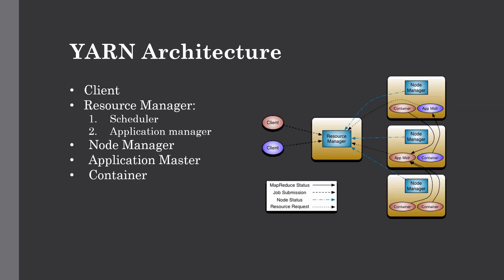Now let's talk about the main components of YARN architecture. The first component is the client, which submits the MapReduce job to the resource manager. The resource manager accepts job submissions from the client, schedules jobs, and allocates resources to them. Resources are the nodes in our cluster that do all the groundwork to process our data. The resource manager is the master daemon of YARN and is responsible for management among all applications. It has two major subcomponents: the scheduler and the application manager.